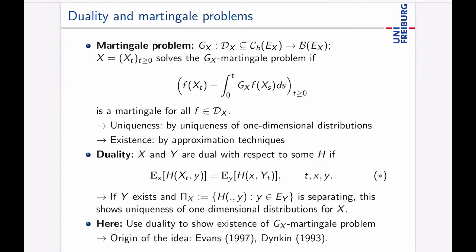And usually you want to have well-posedness of this martingale problem which means that the solution of the martingale problem is unique and exists. Usually what you do is you show uniqueness by showing uniqueness of one-dimensional distributions for any kind of starting distribution and existence is usually done for example by approximation techniques. So e.g. you want to describe Brownian motion and you approximate this by a random walk.